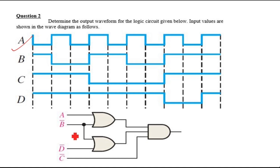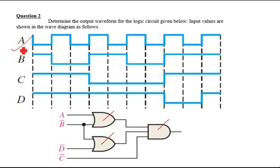Looking at the circuit, it has an OR gate, another OR gate, and an AND gate. The inputs are a, b̄, c, d̄, and c̄. You can see that while the inputs are given in normal form, in the circuit some inputs appear in complement form. So two things to note: we have two OR gates, one AND gate, and some inputs are in complement form.